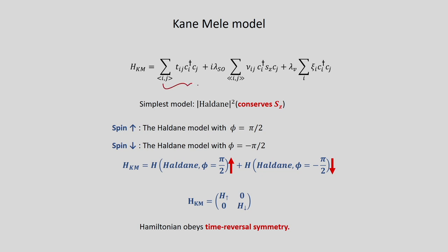The first term is the tight-binding term which is present in graphene — this is really the Haldane term. In the literature it is mostly written as λ_SO. There is also the Semenoff term which opens up a gap of trivial nature at the Dirac points. This is a simple model which is two copies of the Haldane model — written as 'Haldane squared' — and it conserves the S_z component, the Z component of the spin angular momentum, which here denotes the Z component of the true electronic spin.